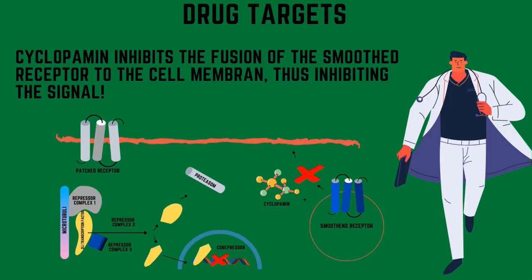The pharma industry discovered a drug product which inhibits this signal. It's called cyclopamine, and it inhibits the fusion of the smoothened receptor to the cell membrane, thus inhibiting the signal, which could lead to repression of the tumor because the activation signal for proliferation is no longer given — the repressor complex is not destroyed and therefore the complex goes into the cell. By the way, the repressor complex contains three parts: the gray part, the blue part, and a green part. The background was also changed to green, so sorry if it's hard to see.